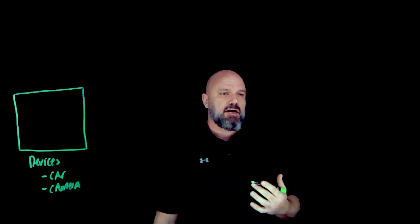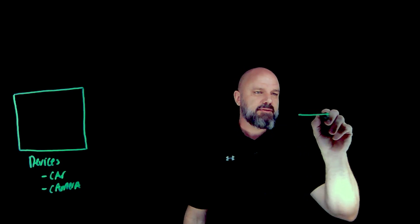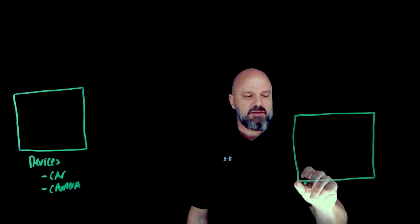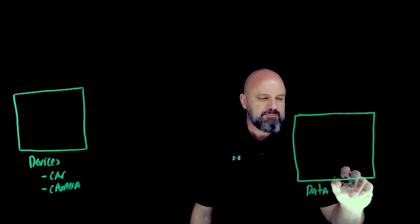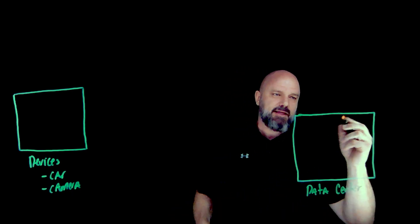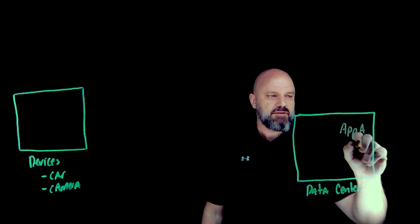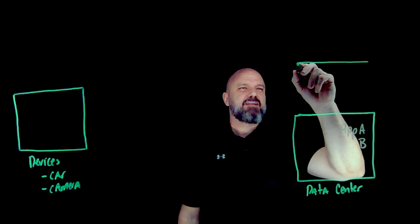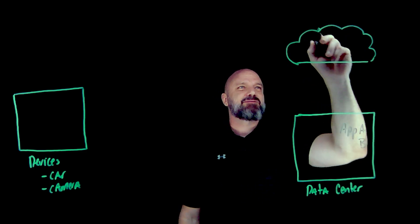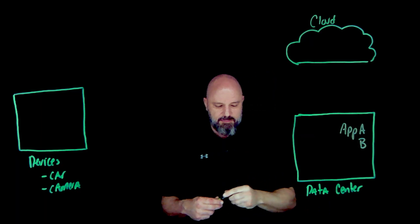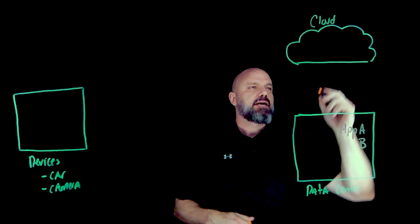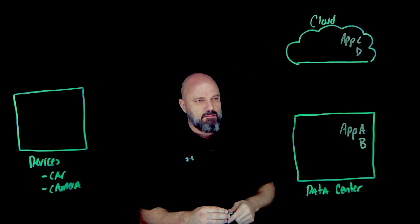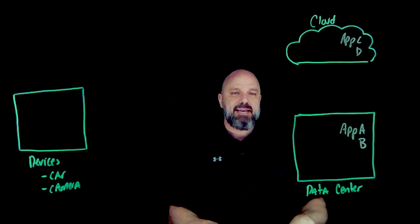These things are never one and done — they need to be touched every once in a while and will need to grab updates. Maybe you're hosting applications in the data center — we'll call those Applications A and B — for these devices to communicate with. Or maybe you're doing this in the cloud: Azure, AWS, GCP, OCI. We'll call those Applications C and D.